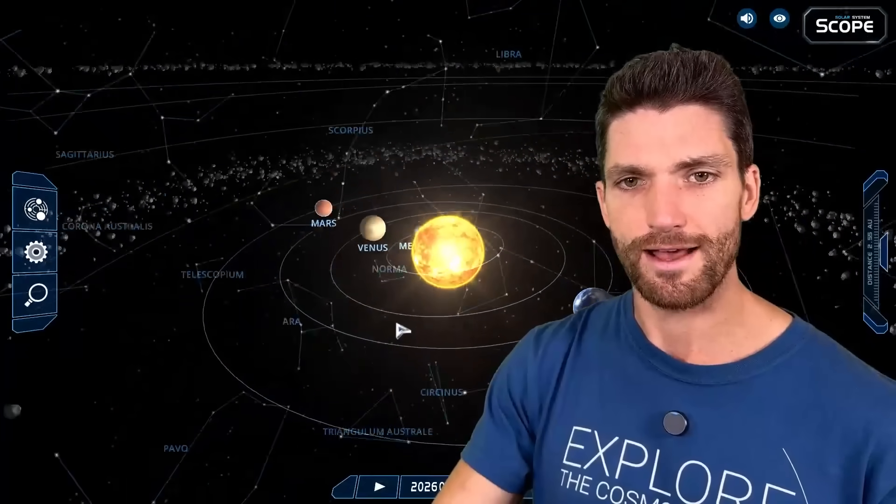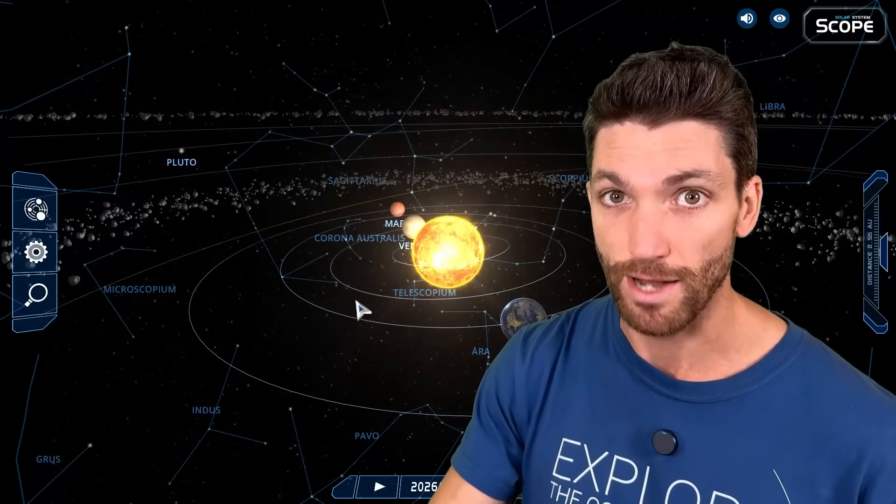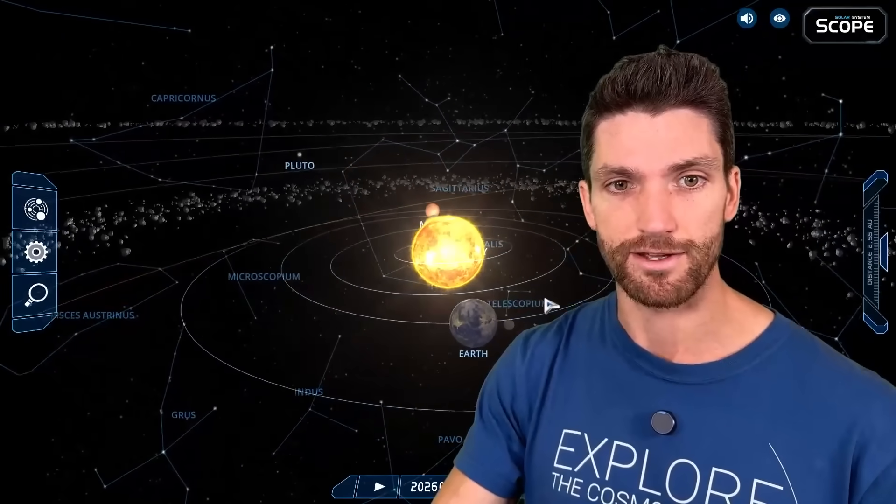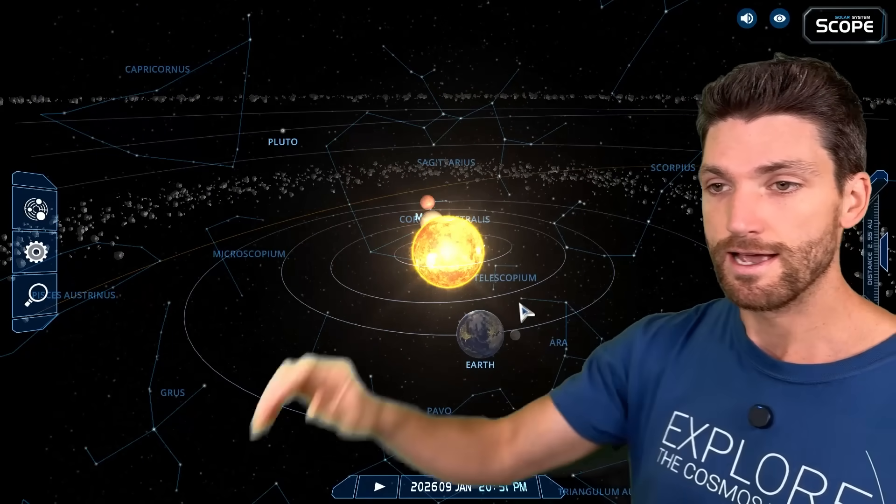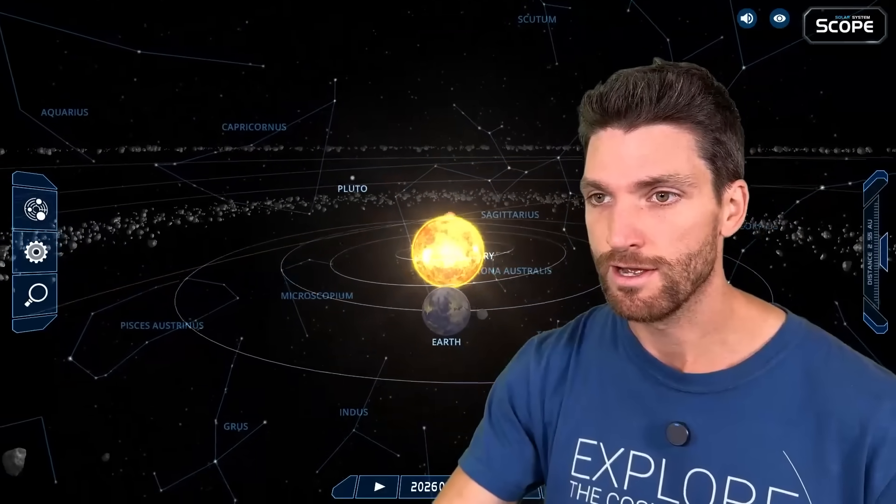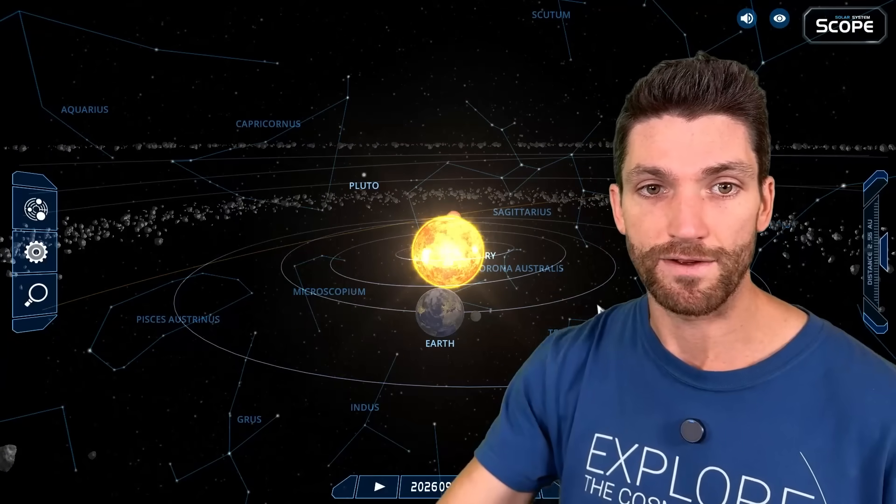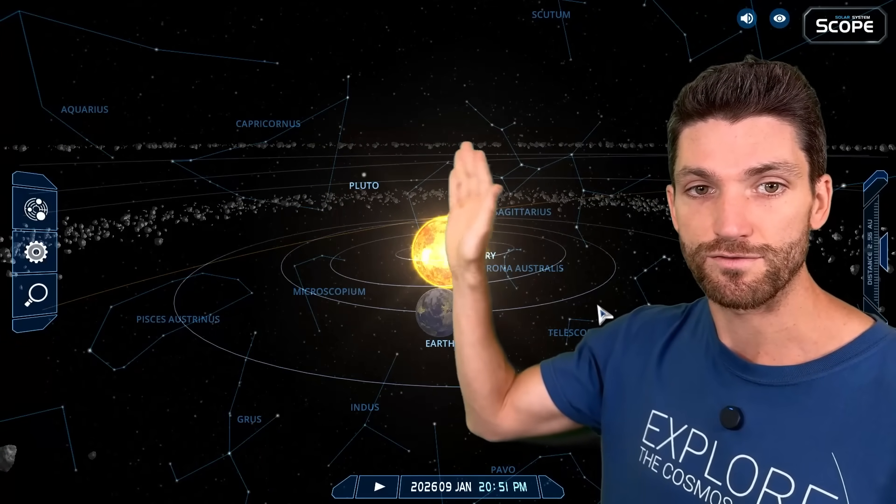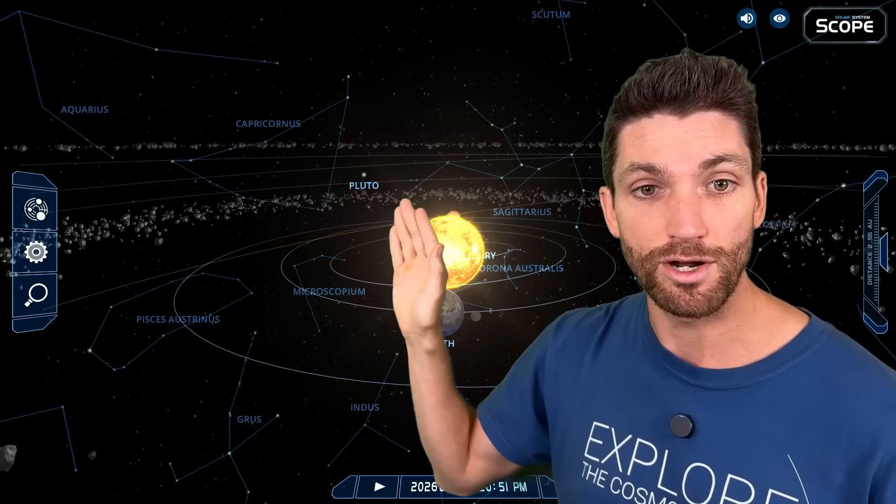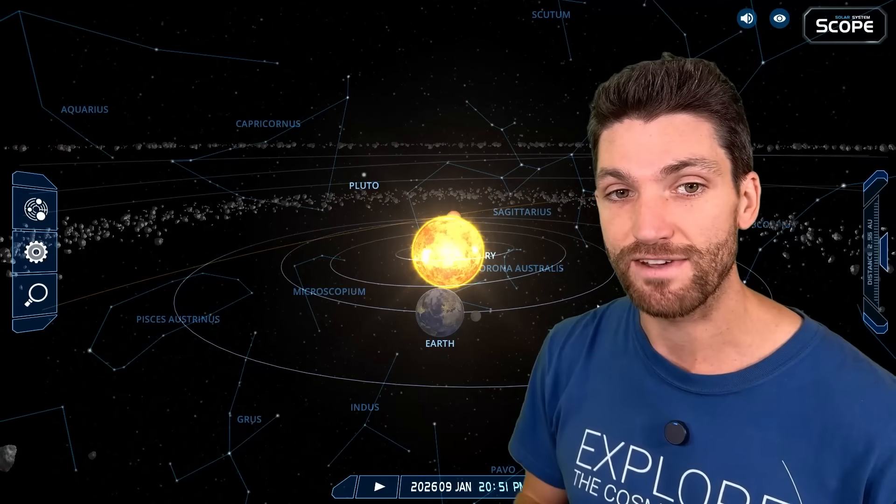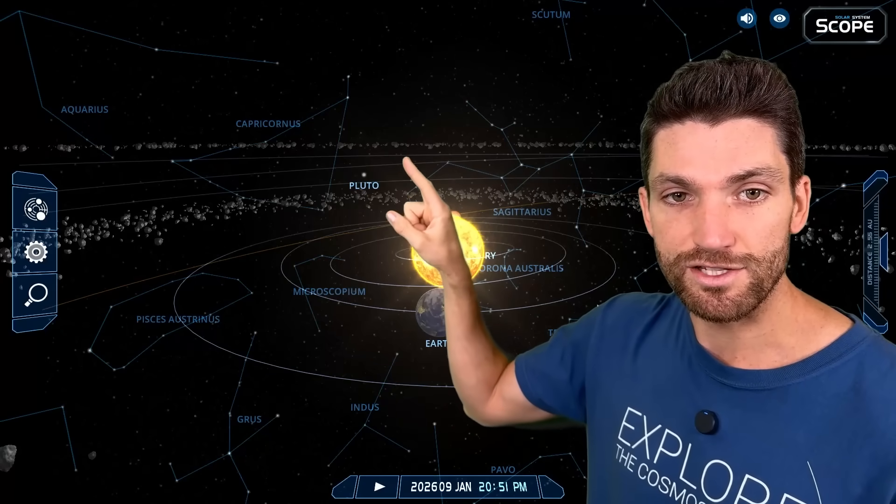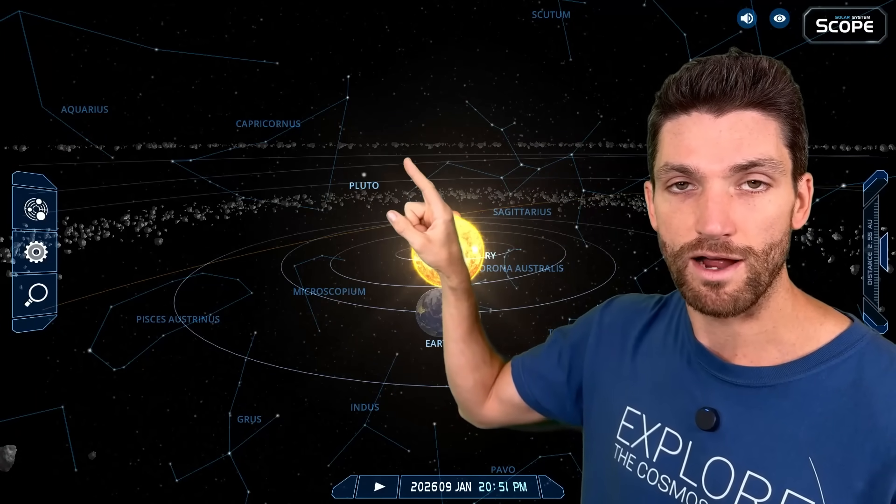And isn't that like where 3i Atlas flew out of? Yes, that is. Here we have the constellation of Sagittarius, and we see this alignment here basically is perfect as to where 3i Atlas first flew in. And we also see Pluto there at the very beginning of Capricorn. 3i Atlas flew in right from this zone right there.